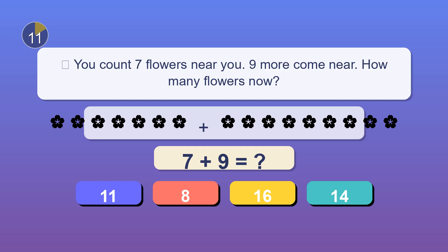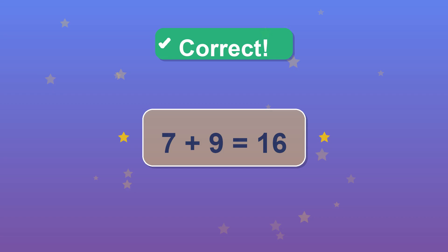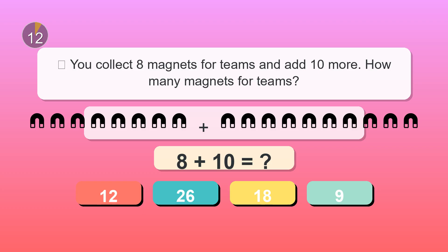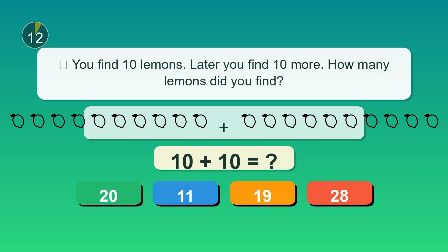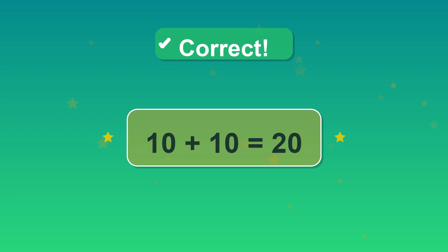You count seven flowers near you. Nine more come near. How many flowers now? 16. Fantastic job. You collect eight magnets for teams and add 10 more. How many magnets for teams? 18. High five. You find 10 lemons. Later you find 10 more. How many lemons did you find? 20. Exactly.